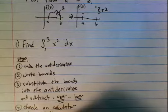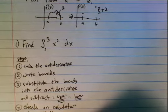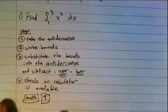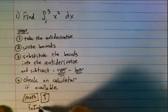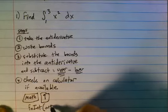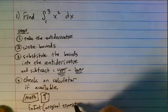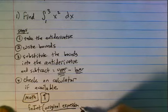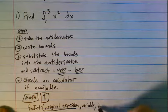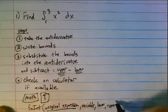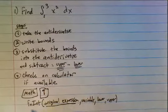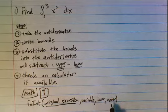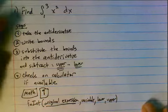The fourth step is to check on the calculator if it's available. Go to Math, then 9 — that's the finite integral function. The expression will look like: finite integral, original expression, variable, lower bound, upper bound. In the finite integral we go from the lower bound to the upper bound.